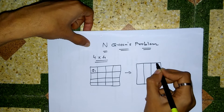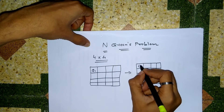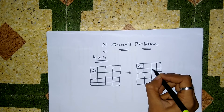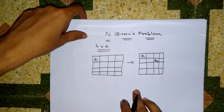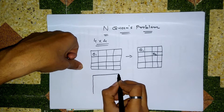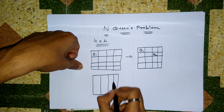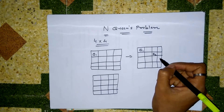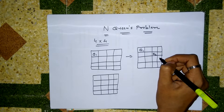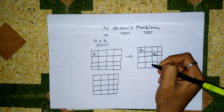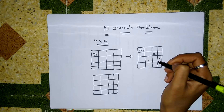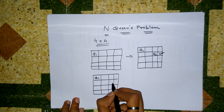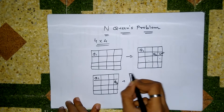So this is Q1, and we will put Q2 here. This is a possible placement for now, but not the actual solution. Now where can we put Q3? We cannot put Q3 here, or here, or here. So we replace Q1 and move it to another position.